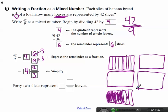So total, this is what I'm representing. So 42 slices, 42 individual slices, is really 4 whole loaves and 2 thirds of another loaf.